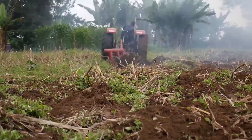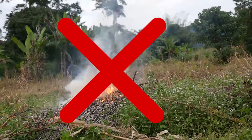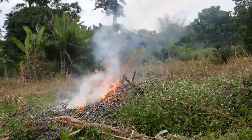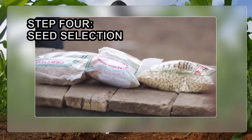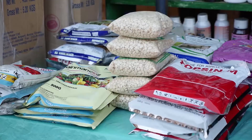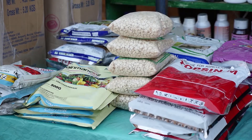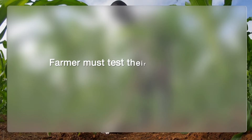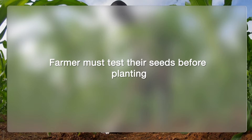Avoid burning because the decaying weeds and crop residues act as a mulch for the maize crop. Step 4: Seed selection. Use certified seeds bought from agro-dealers. It is important to test the germination and vigor of your planting seed before sowing, to prevent problems arising from poor stand.